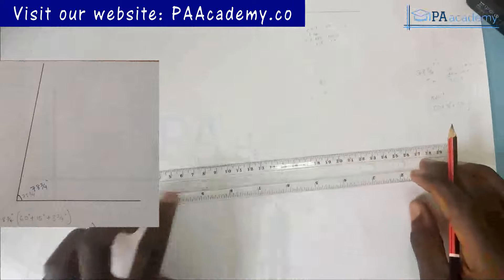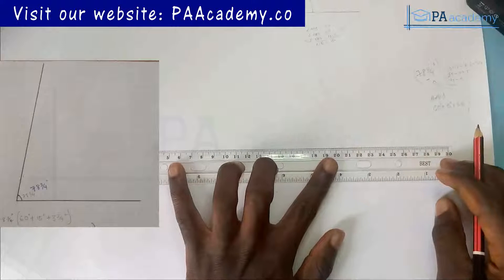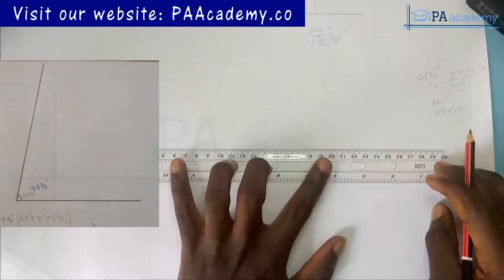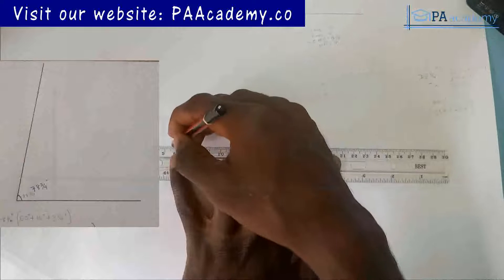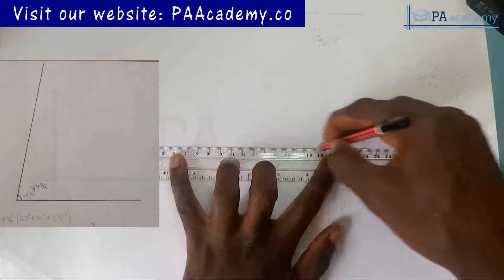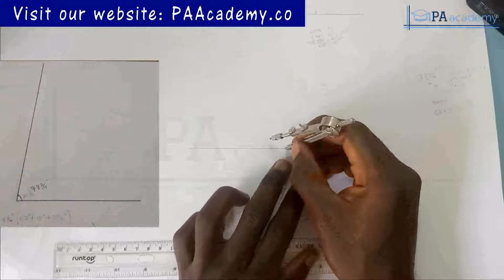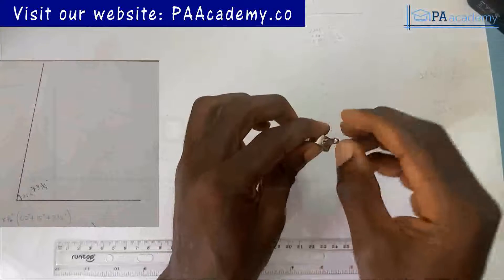The first thing I'm going to do is draw my straight line. If you are new to this channel, PA Academy, please kindly consider clicking on that subscribe button. Now I've drawn a line — I'll bring in my compass and draw a semicircle on this line.